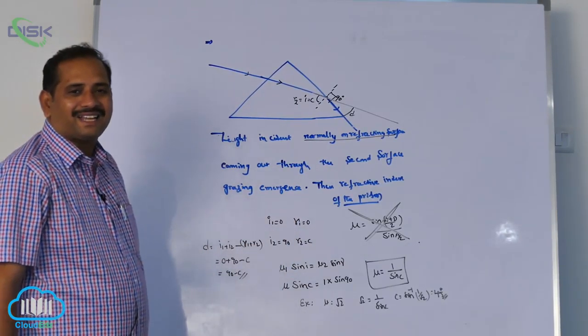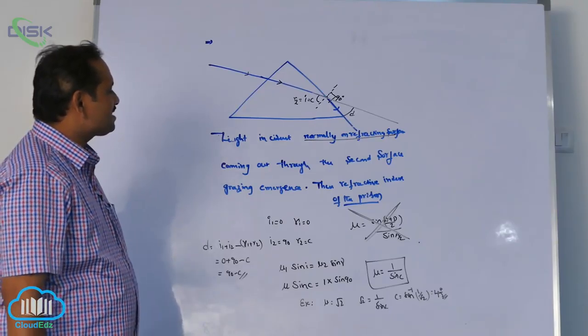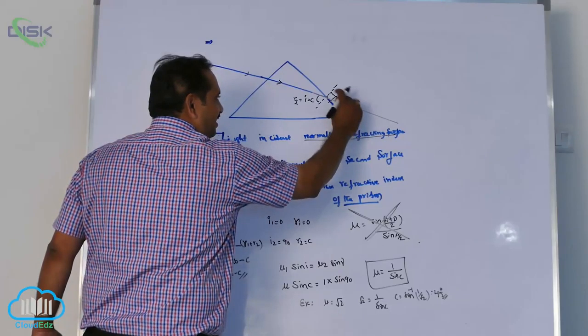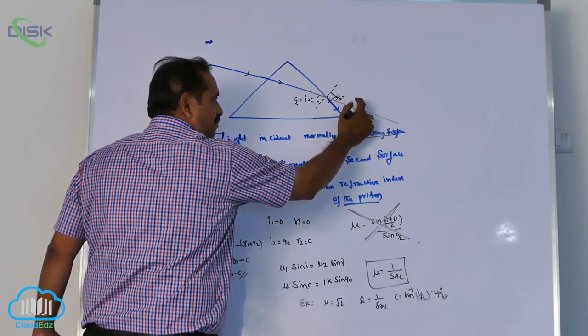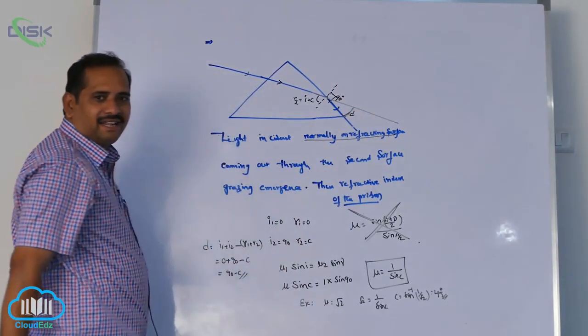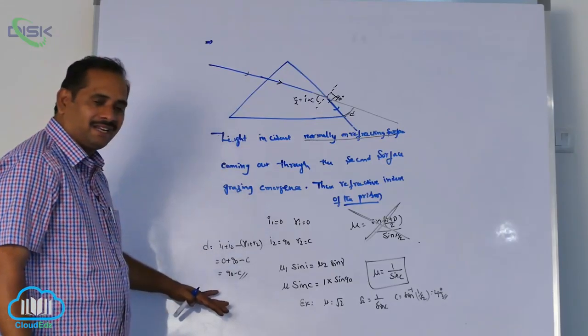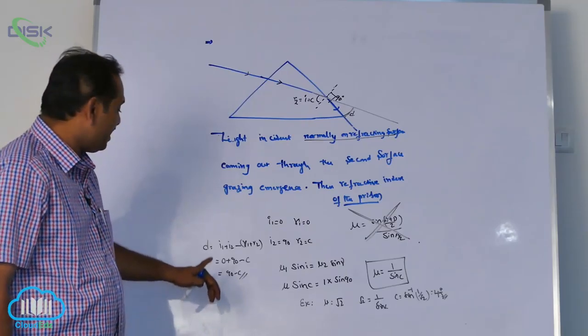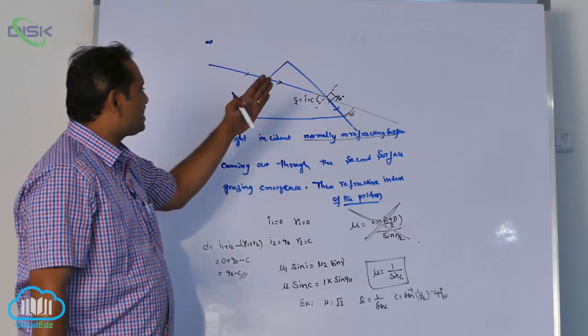How to check my answer is correct or wrong? You can understand very clearly from the diagram. Deviation is this. This angle is 90. My answer should be less than 90, less than 90, it is correct. Less than 90. 90 minus c means more than 90 or less than 90? Less than 90. That means the deviation is correct, sir.